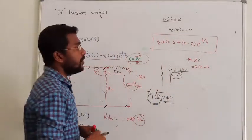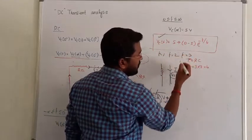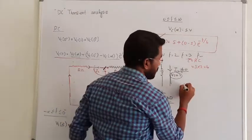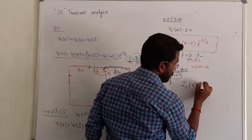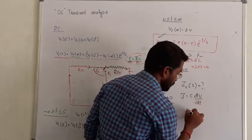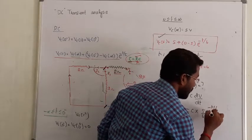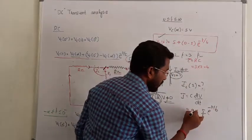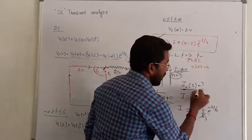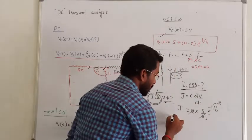Now the question is: find the voltage across the capacitor at t = 1, 2, 3 seconds, or at t = infinity — just substitute T and get the corresponding value. If the question asks for the current through the capacitor, use I = C · dV/dt. Differentiating VC(t) = 5 − 5·e^(−t/6) gives IC(t) = 2 × (5/6) · e^(−t/6) = (5/3) · e^(−t/6). Replace t by the given value to get IC at that instant.